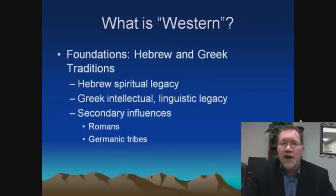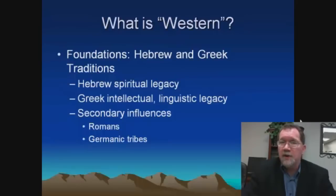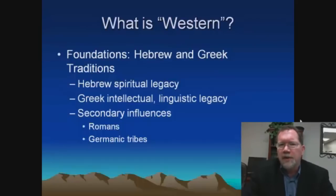The Germanic tribes have passed down many things to us. Most of the Western languages — for example, English and French — are influenced by the Germanic tribes. English, at its most fundamental level, is a Germanic language. So all of these groups leave their mark on Western civilization. When we use the term Western in this class, that's what we're talking about: the civilization that has been influenced by these groups of people to a very great extent.